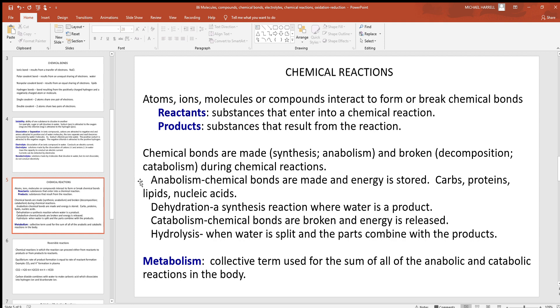Anabolism, here you've got chemical bonds are made and energy is stored. Carbs, proteins, lipids, nucleic acids are good examples of that. Dehydration's where you have a synthesis reaction where water's a product. So you got water coming out over on the right side of the reaction. Some hydrogen and oxygen were removed from something on the left combined to make water over on the right.